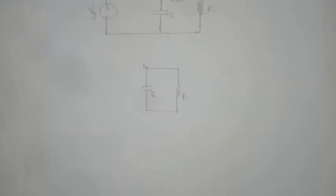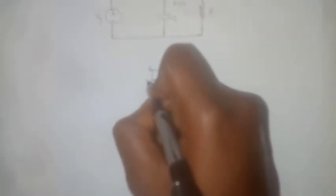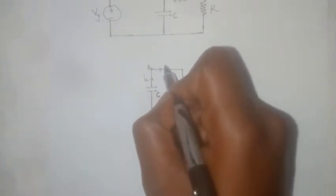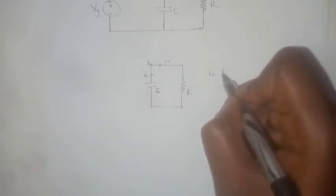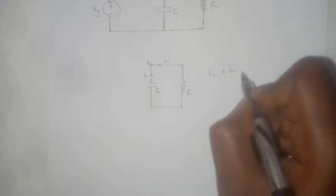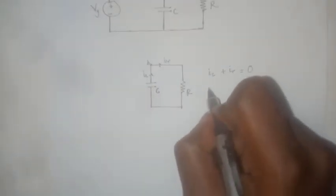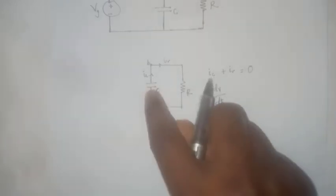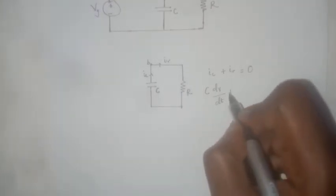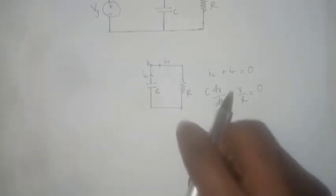To do that, we go back to our KCL equations, which tell us that the sum of currents at any junction is zero. The current here — let's call it IC — and the current in this branch — let's call it IR — gives us IC plus IR equals zero. IC can be written as C·dV/dt, as that is the current flowing through the capacitor, and IR can be written as V over R, as that is the current flowing through the resistor.